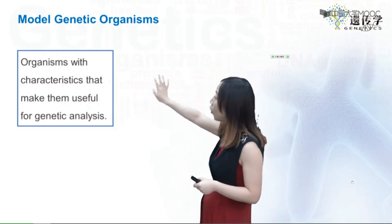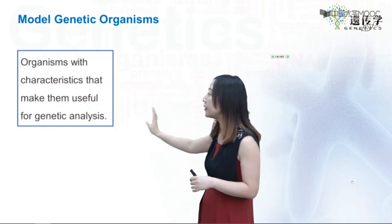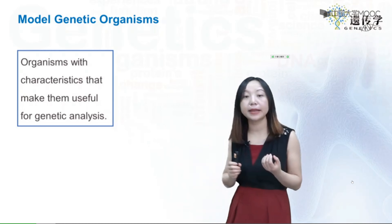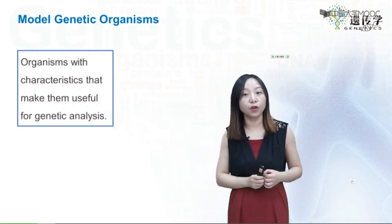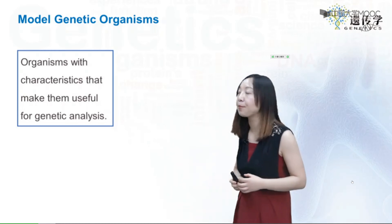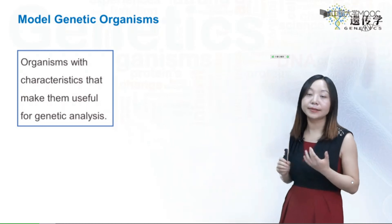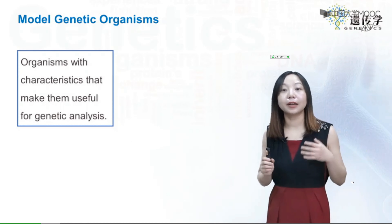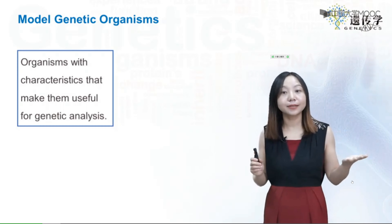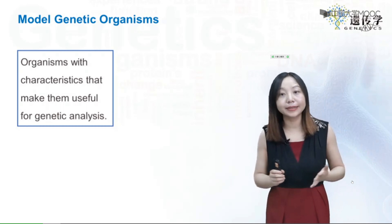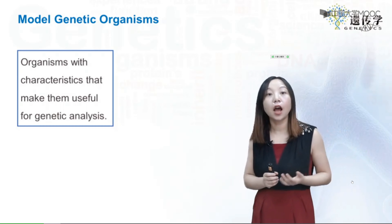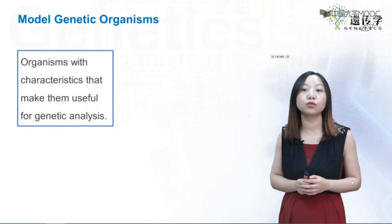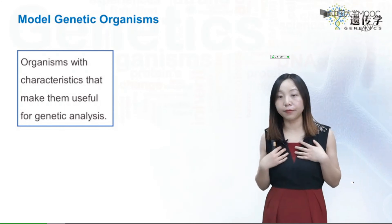Model genetic organisms are organisms with characteristics that make them very useful for genetic analysis. They shape the current landscape of genetic studies, and without the help of these model organisms, we wouldn't be able to know so much about our own genes.